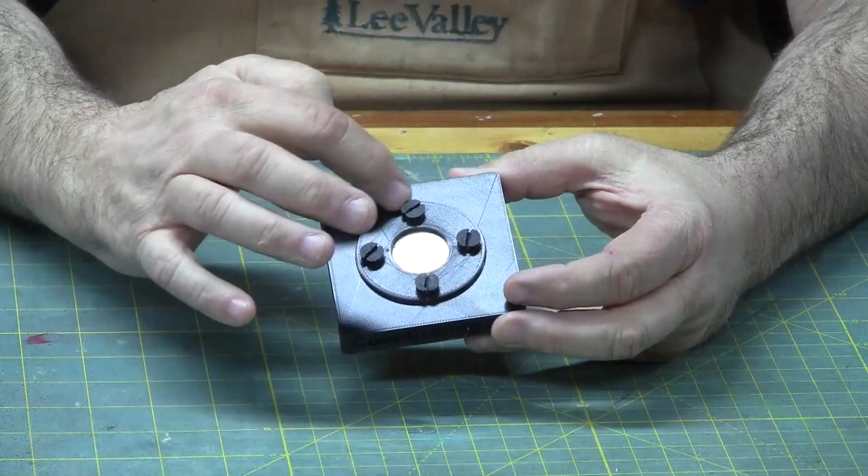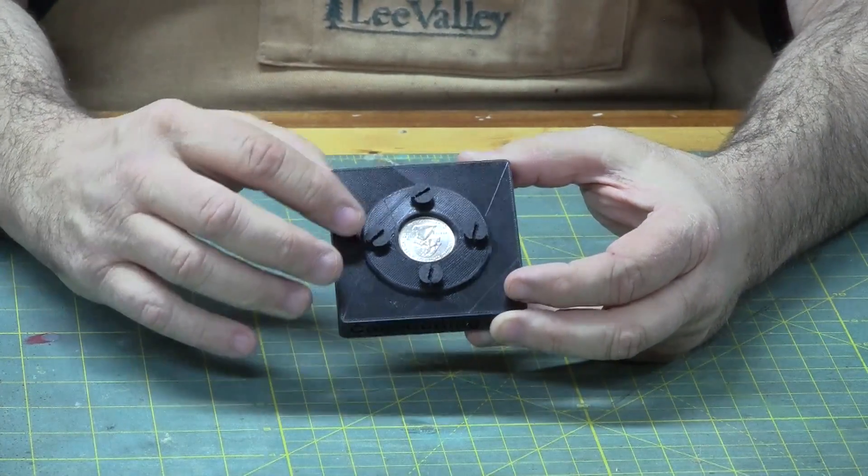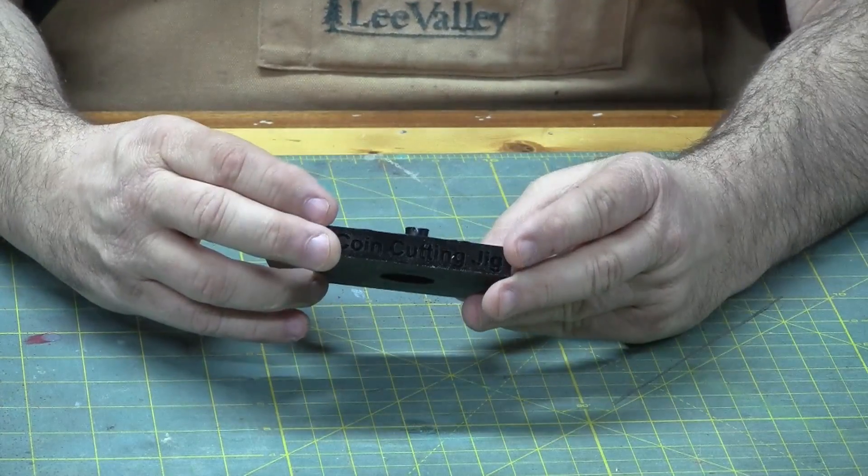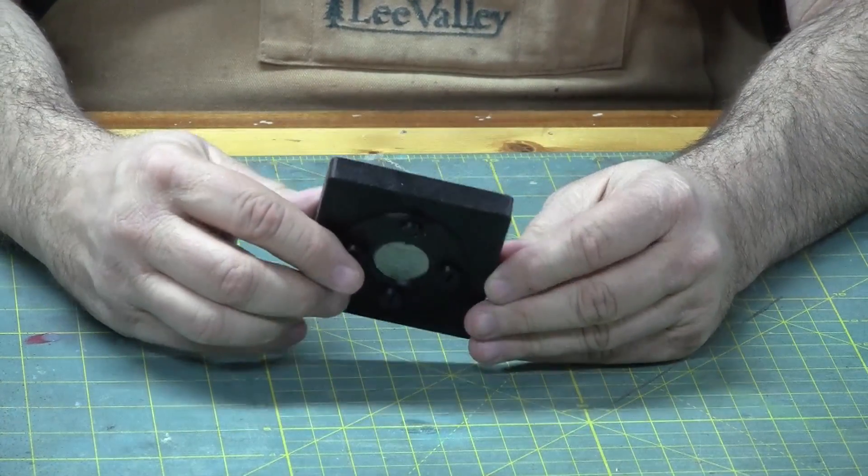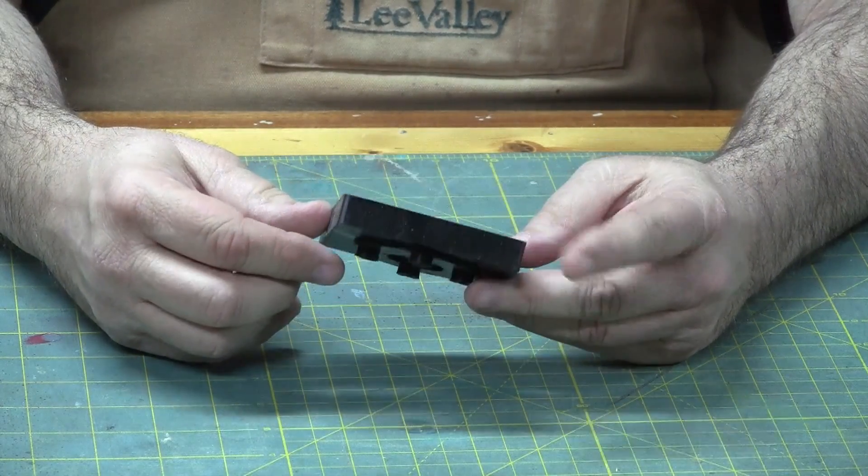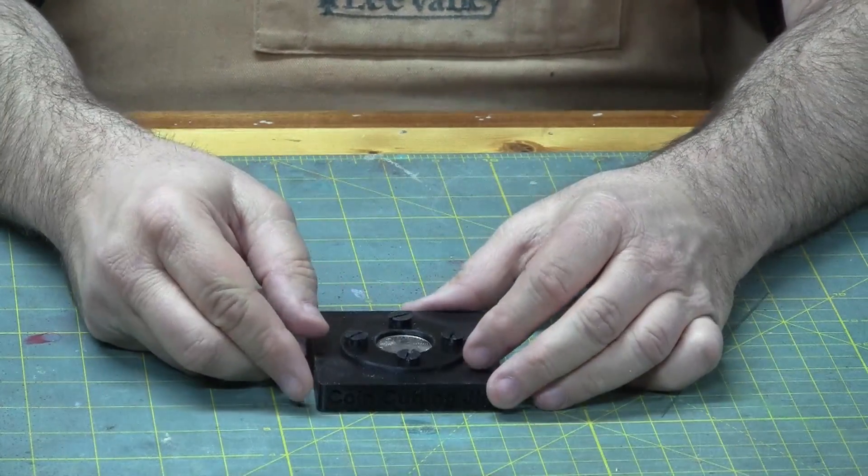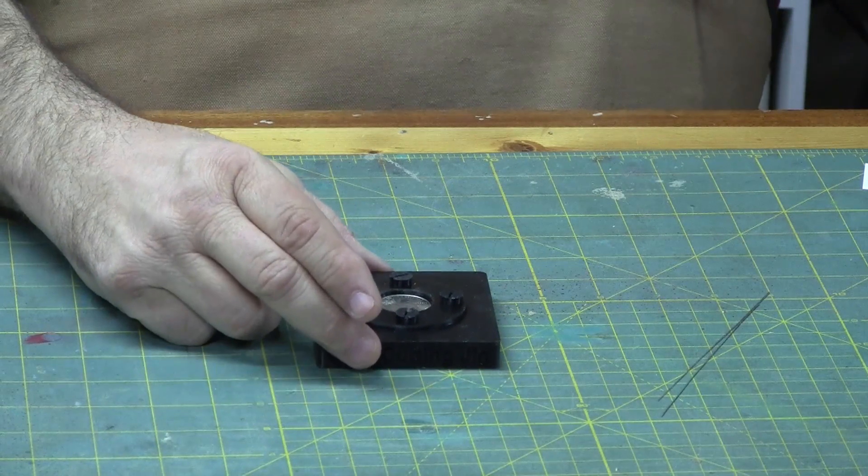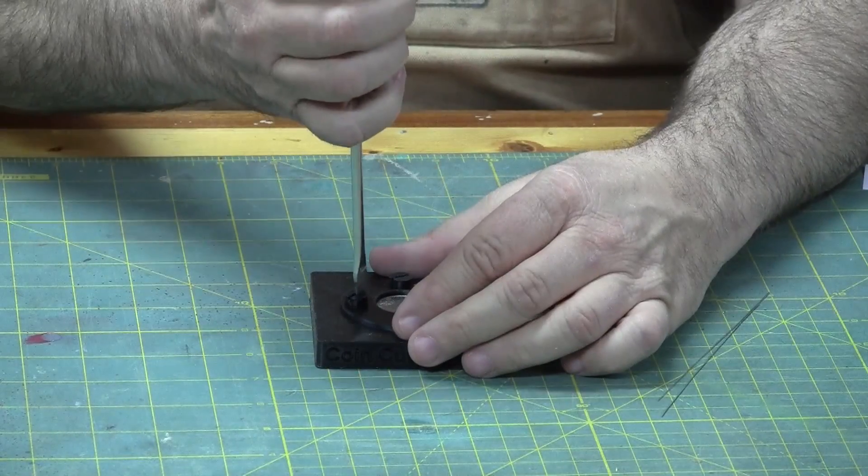As you can see, it has a flange and four screws. And then you've got this half inch thick piece of plastic with a hole that goes all the way through it. And let's go ahead and take the bolts out. And we'll talk about the construction real quick.